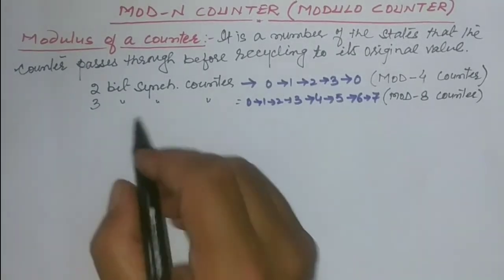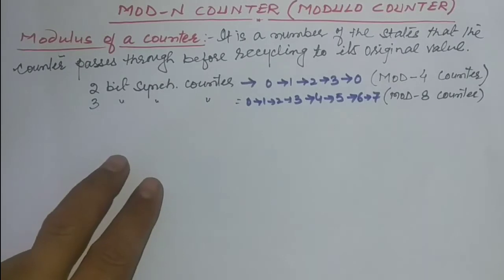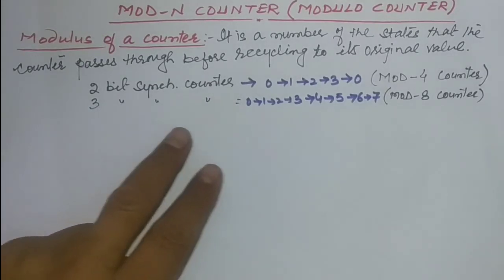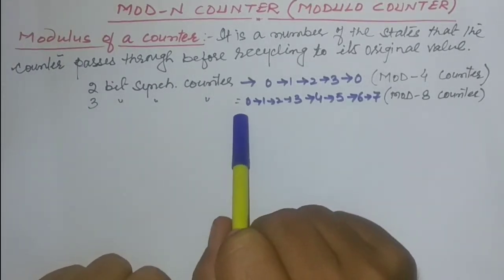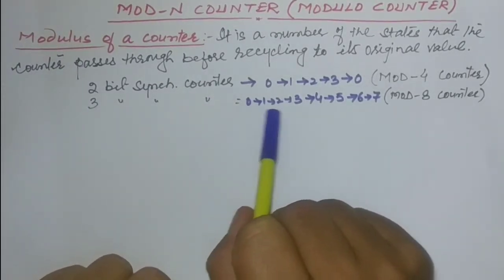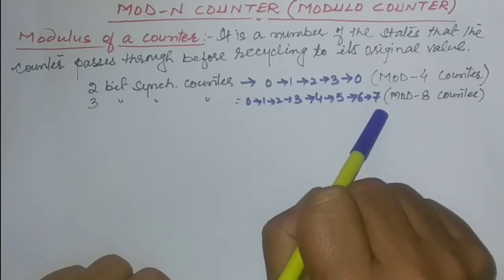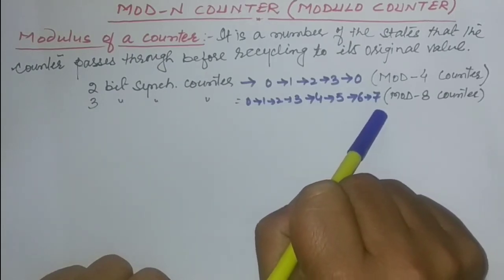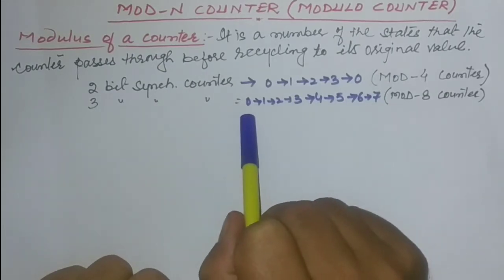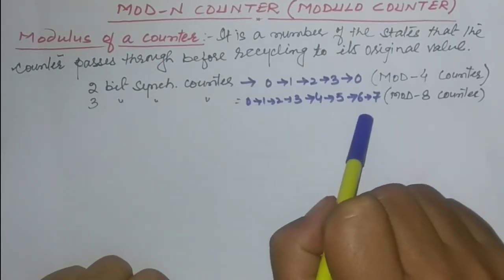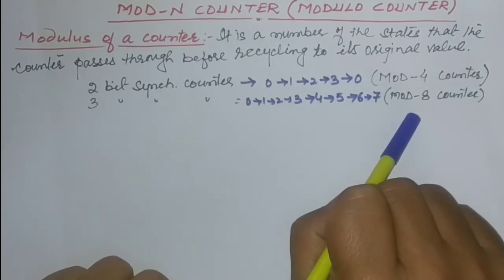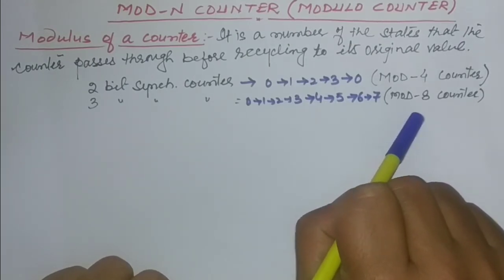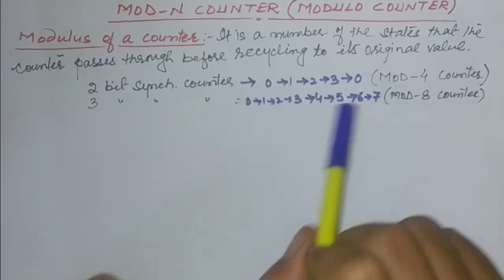In the same way, we can have a 4-bit synchronous counter where the sequence of states goes from 0 to 15, and this is known as a mod-16 counter.